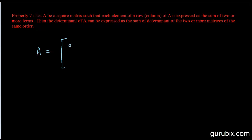That means the first row elements are: a + α1, b + α2, and c + α3. Suppose that these elements are in row 1.